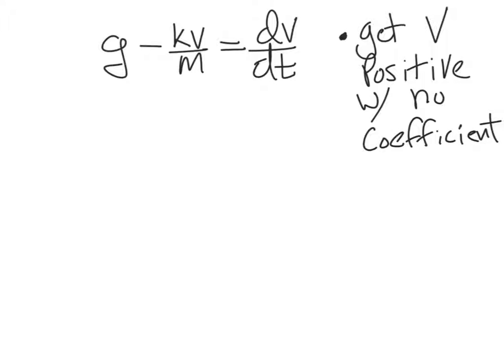A second order differential equation would be a function v that's related to its own second derivative. Our goal now is to get v, the v that's on the left, not the dv, get the v on the left to be positive and with no coefficient in front of it. So I want to get just a positive v, which means I need to factor out this negative k over m right there.